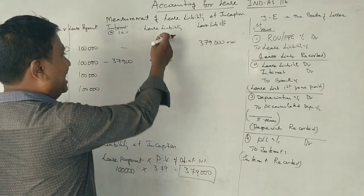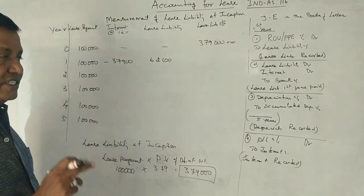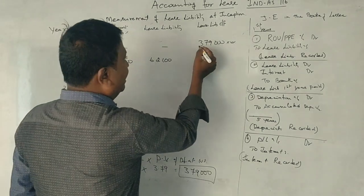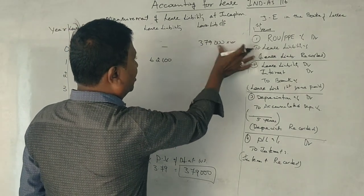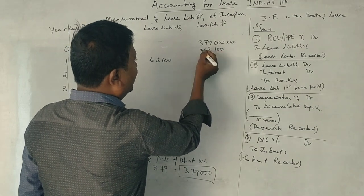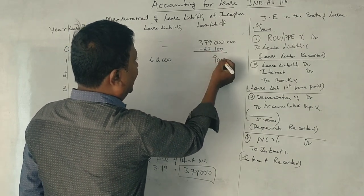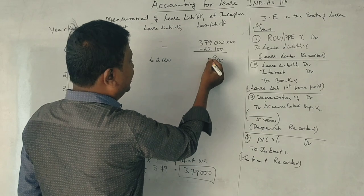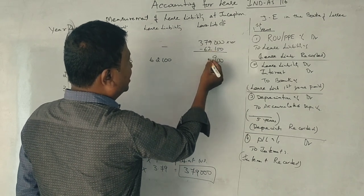This amount is 62,100 rupees, first year lease liability reduction. Lease liability 62,100 first year. Total lease liability 3,79,000 rupees, this amount 62,100 minus.